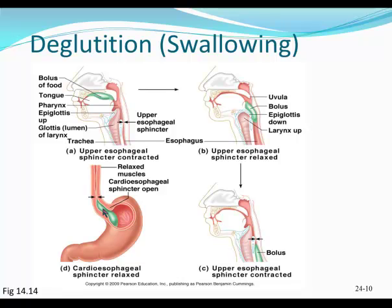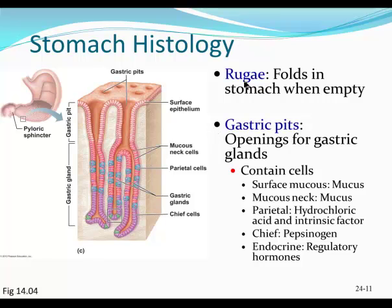Once food reaches the stomach, the rugae — wrinkles in the stomach wall — allow the stomach wall to stretch as food enters. Within the stomach wall are pits lined with simple columnar cells. Some cells near the surface secrete mucus. Deeper cells secrete hydrochloric acid and intrinsic factor — intrinsic factor is important for absorbing vitamin B12. Cells called chief cells are lower in the pits and produce pepsinogen, which is converted to pepsin to help break down protein, so some protein digestion occurs in the stomach. Endocrine cells secrete hormones that help regulate digestion.